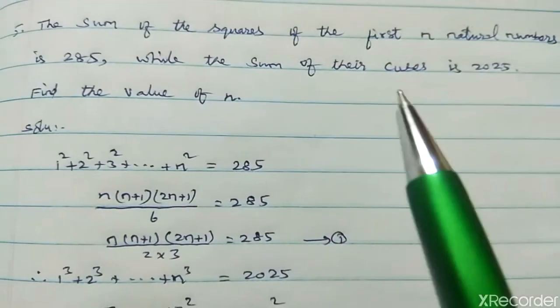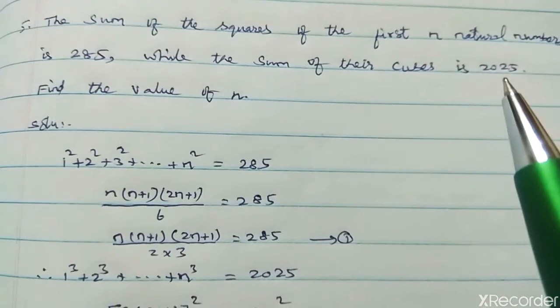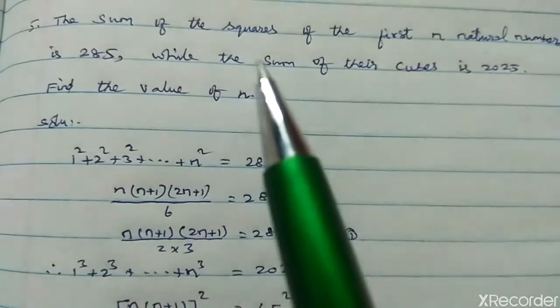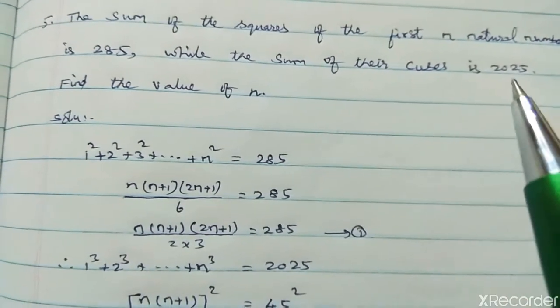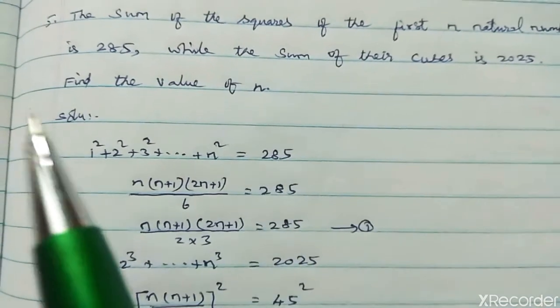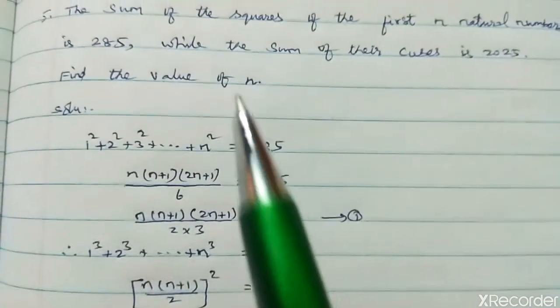While the sum of their cubes is 2025. Cube, 1 cube plus 2 cube plus up to n cube equal to 2025. Find the value of n.